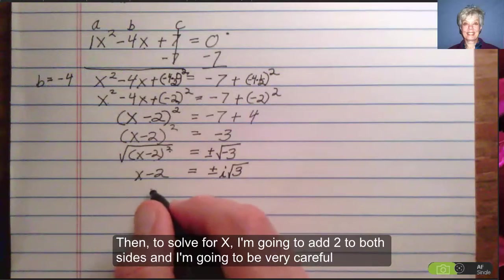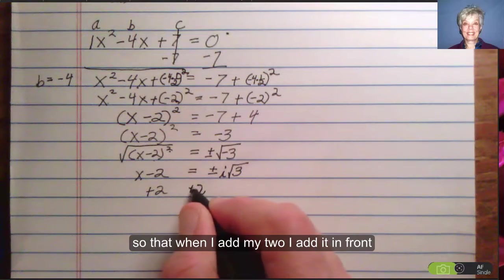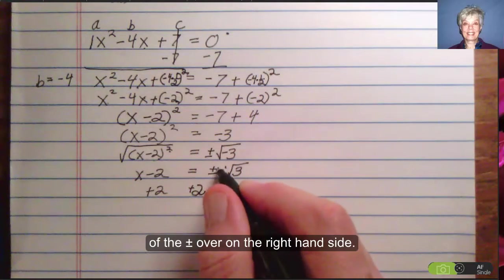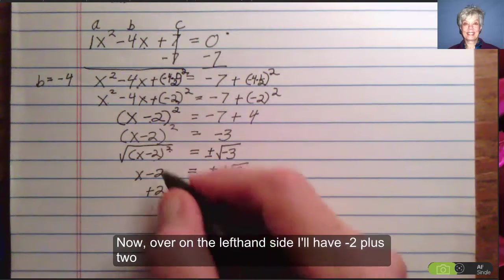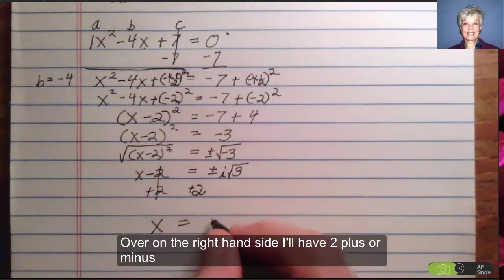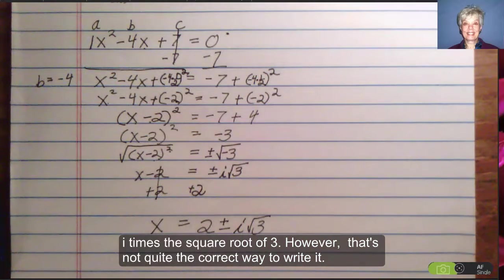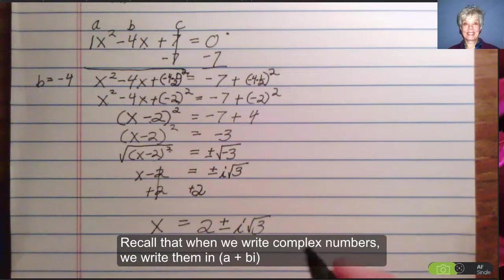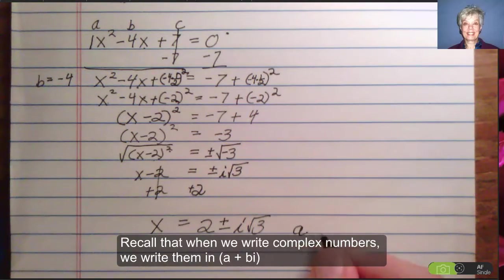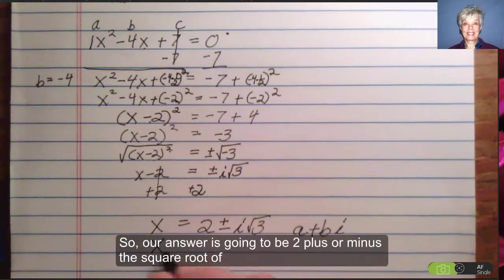Then to solve for x, I'm going to add 2 to both sides and I'm going to be very careful so that when I add my 2, I add it in front of the plus or minus sign over on the right hand side. Now over on the left hand side, I'll have negative 2 plus 2, which is 0. I'm left with an x. Over on the right hand side, I'll have 2 plus or minus i times the square root of 3. However, that's not quite the correct way to write it. Recall that when we write complex numbers, we write them in a plus bi form. i has to go on the end. So our answer is going to be 2 plus or minus the square root of 3, i.